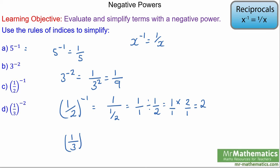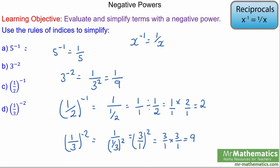The last one: 1 third to the power of negative 2. Negative power means 1 over 1 third squared. As we saw in the last question, we can simply write 1 third as 3 over 1, so 3 over 1 squared is 3 over 1 multiplied by itself — 3 over 1 — which is 3 times 3, which is 9. Thank you for watching, hope you found it useful.